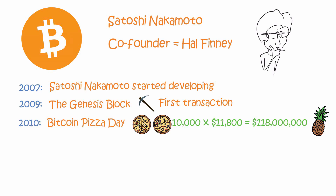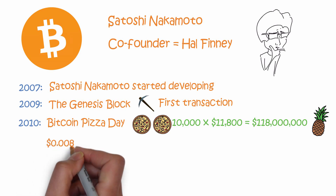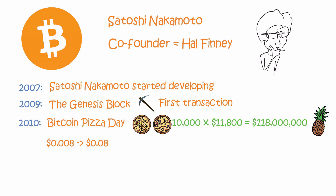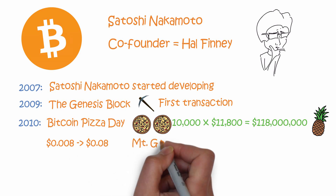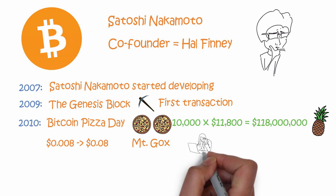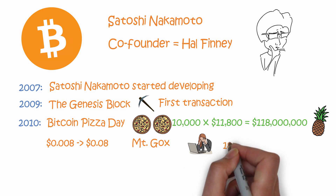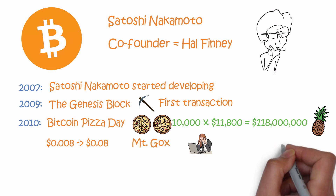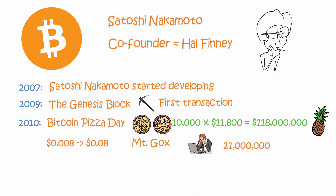In July 2010, bitcoin's price raised from 0.8 cents to 8 cents. Five days later, bitcoin joined an exchange called Mt. Gox, and was slowly starting to become the bitcoin we know today. Less than a month after joining Mt. Gox, bitcoin was hacked and 184 billion bitcoins were created. This problem is now fixed and the cap on bitcoins is back to 21 million. In 2012, Coinbase, the most popular cryptocurrency exchange, was founded.